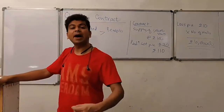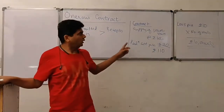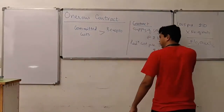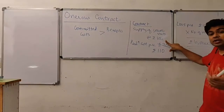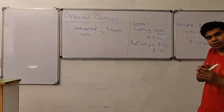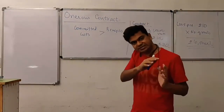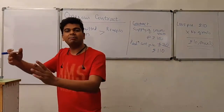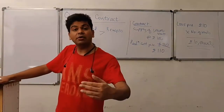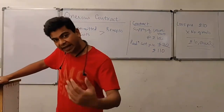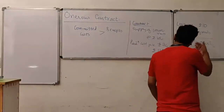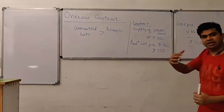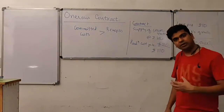You have entered into a binding contract for sale and already promised your client that you will supply 1 lakh units at ₹100. At the time of signing it made sense because the production cost was under ₹100, so you saw profit potential. Unfortunately, costs spiralled up and a contract that was going to result in a gain is now producing a loss of ₹10 lakhs. Your committed costs are now exceeding the benefits, so this is an onerous contract.